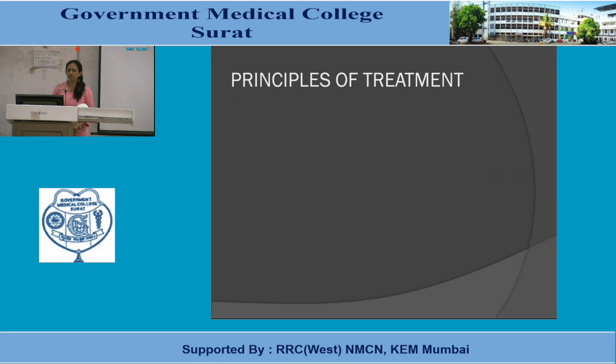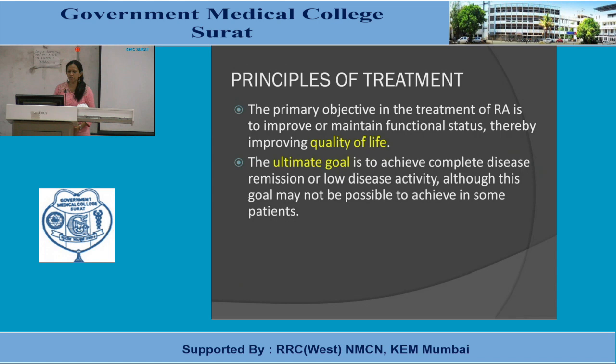Regarding principles of treatment, the primary objective is to improve or maintain functional status, thereby improving quality of life. Since rheumatoid arthritis is largely an incurable condition, patients must live with it lifelong, and the physician's goal is to improve quality of life as much as possible.